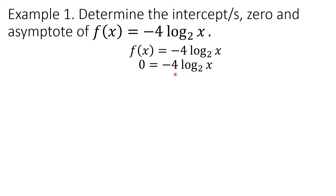Look at the right-hand side of the equation — it is composed of two factors: negative 4 and the logarithm. To simplify this, we use the multiplication property of equality, dividing both sides by negative 4 or multiplying both sides by negative one-fourth. Zero divided by negative 4 is still 0, and negative 4 times log₂(x) divided by negative 4 leaves log₂(x).